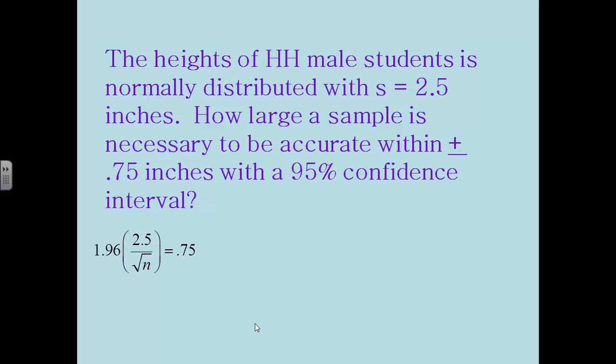The first step is to divide both sides by 1.96 and you get that. Then we're going to cross multiply and move that square root of n over to the other side. Then I'm going to divide by 0.383 on both sides and I get that answer. And then to get rid of that square root I'm going to square both sides, and I wind up getting 42 point something so I'm going to round up, therefore n equals 43.